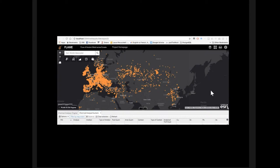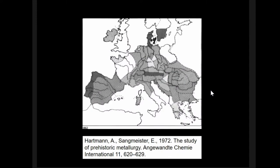I would like to start from some old examples. The problem is how to visualize big datasets like 50,000 analyses on a large scale. We have examples from one of the biggest projects done in Europe — work by a group of researchers based in Stuttgart who worked in the 60s and 70s. They analyzed something like 20,000 metal objects dated to prehistory, and this is how they decided to visualize the results geographically.